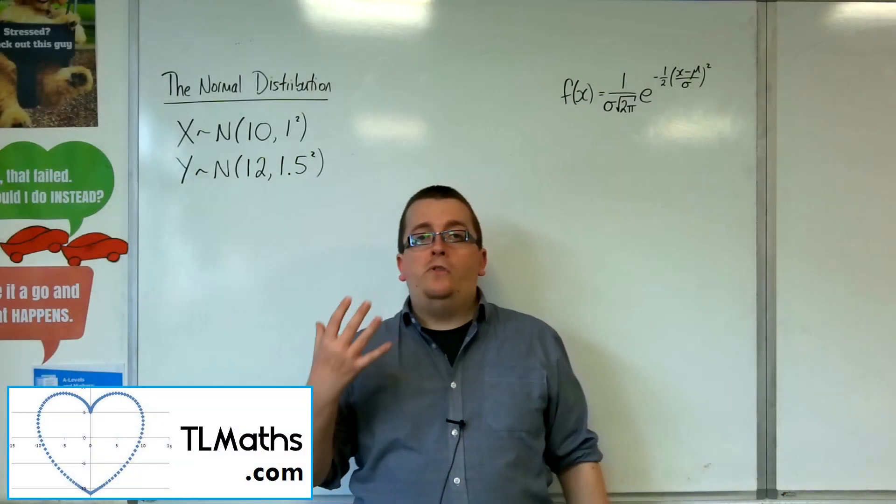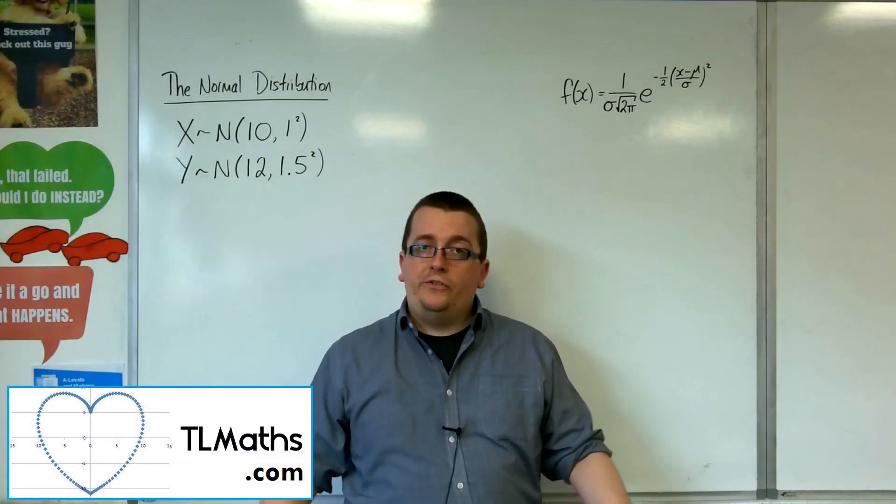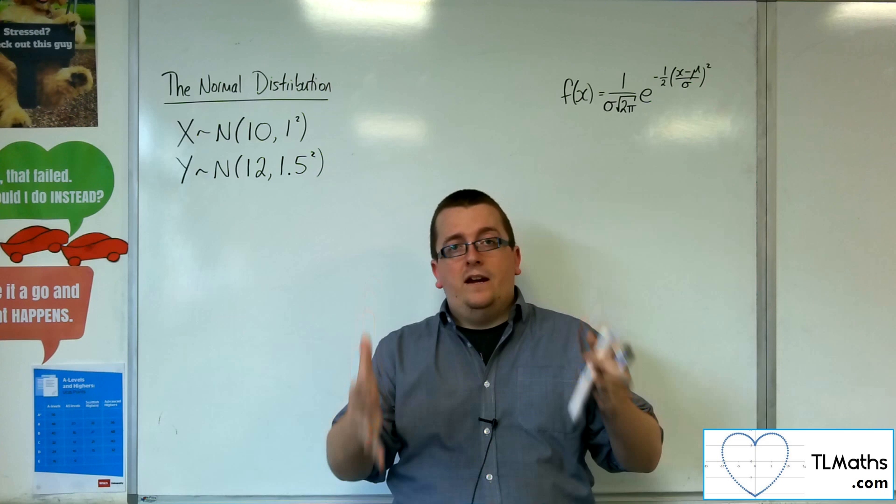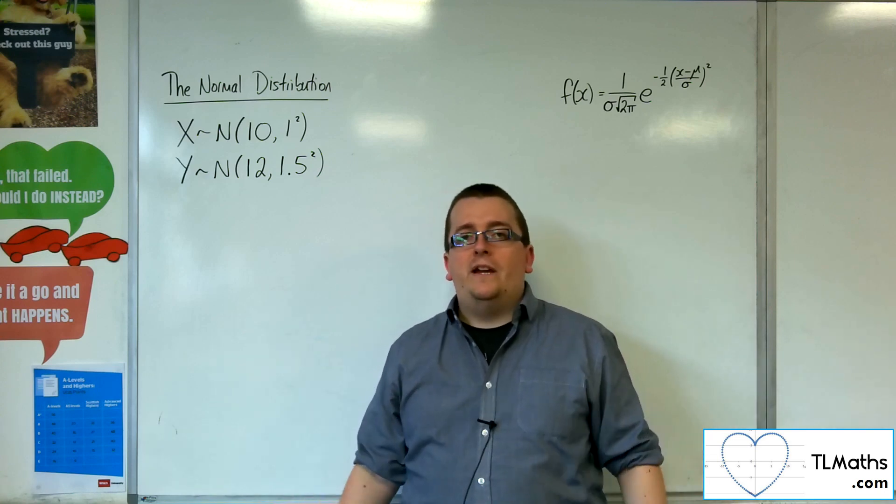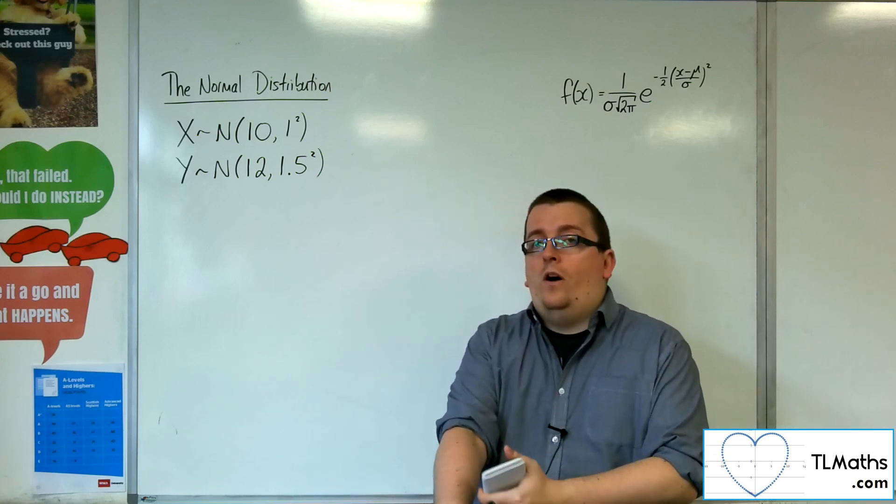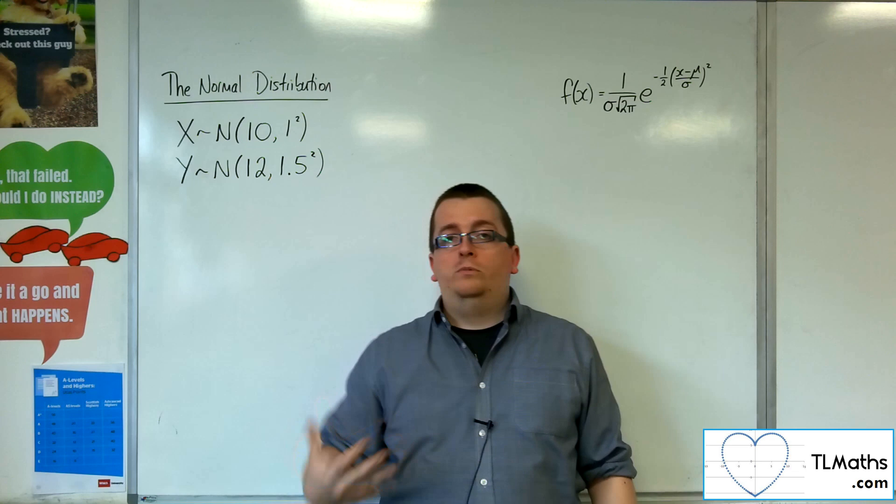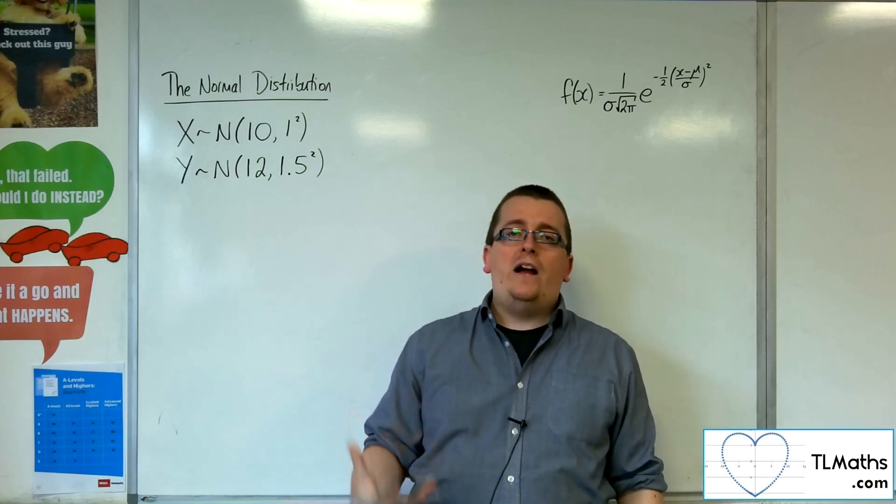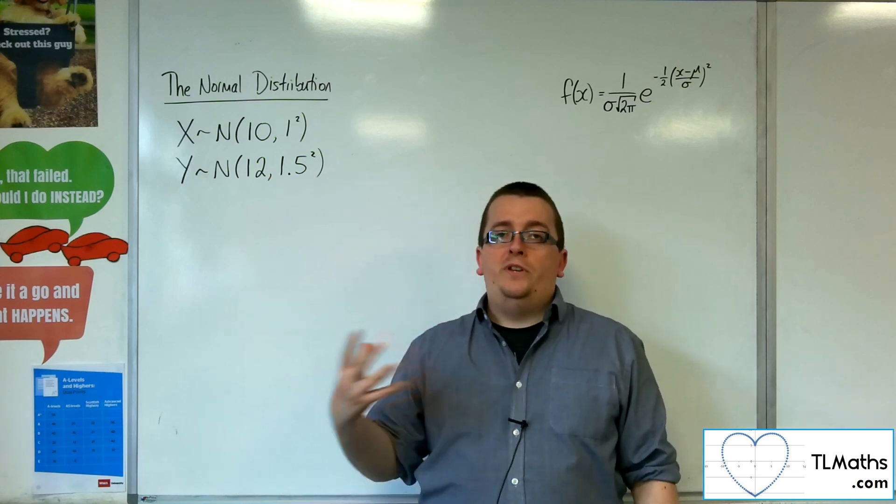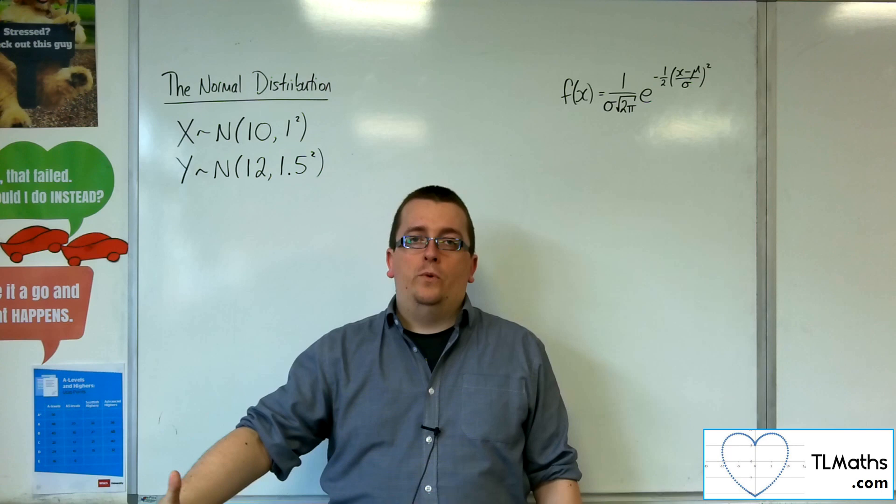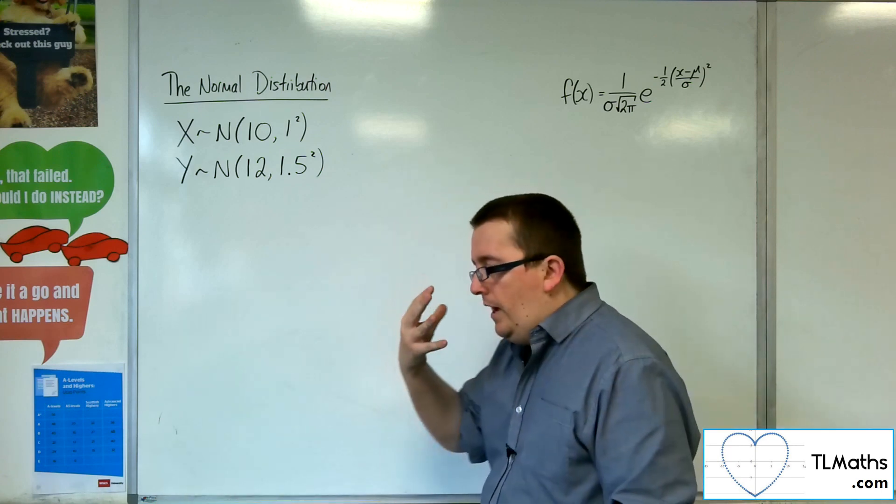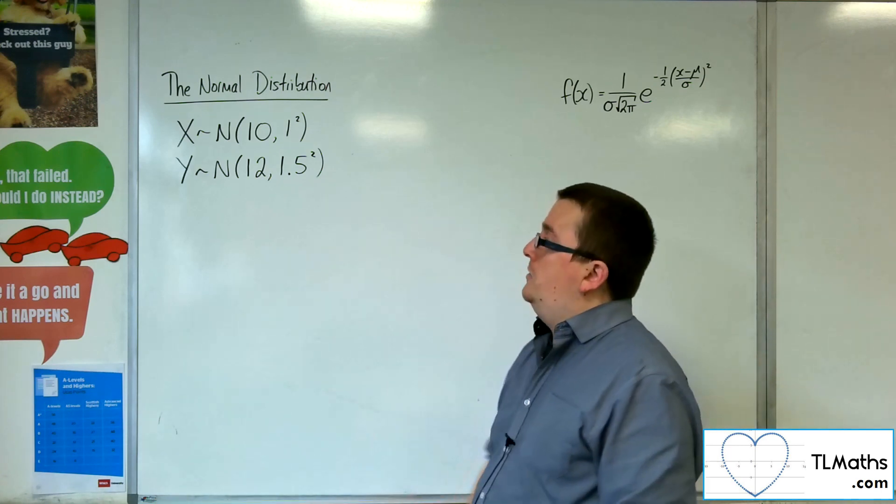We've been introduced to the bell curve in the previous video and seen how it is divided up into its standard deviations. In this video I want to introduce you a little bit more to the normal distribution. I want to show you how we can compare two distributions and really where we're going with this. What types of problem are we going to meet?